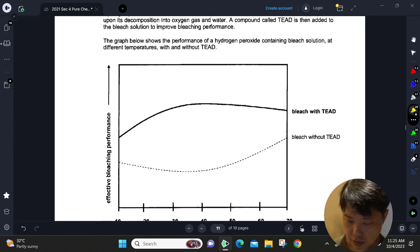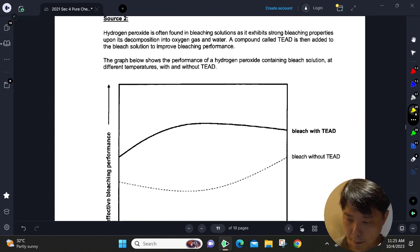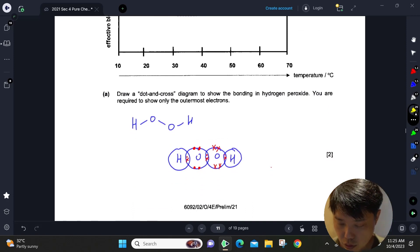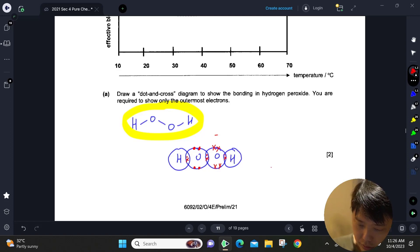Here is a graph on a compound called TEAD mixed into peroxide to improve the bleaching performance. The first question: draw the dot-and-cross diagram to show the bonding in hydrogen peroxide. This is actually the structure, quite similar to water. Basically, oxygen has six valence electrons, hydrogen has one. To achieve octet configuration, oxygen needs to form two covalent bonds and hydrogen needs to form one.